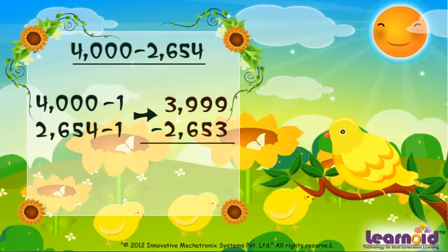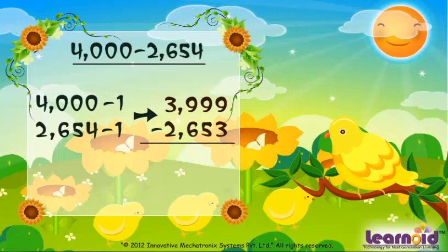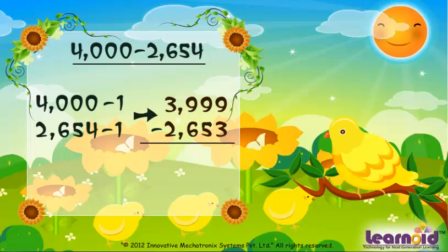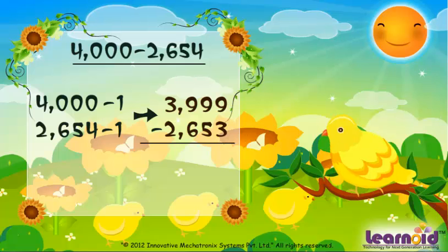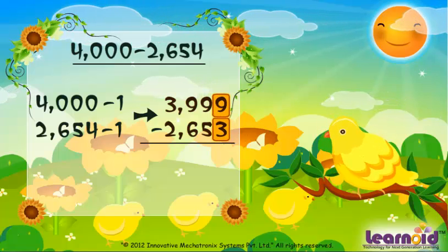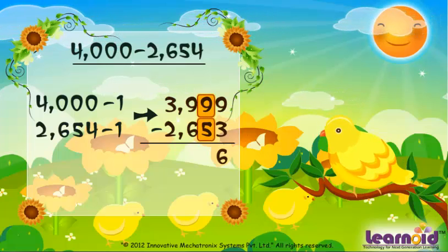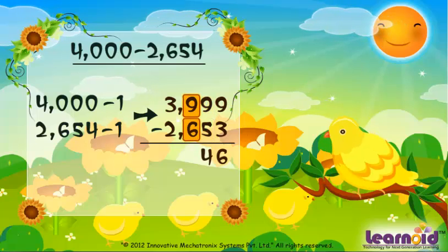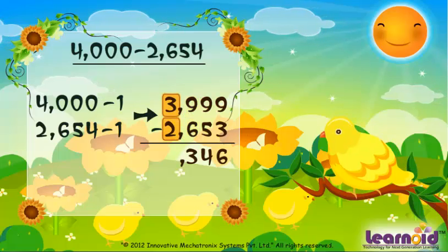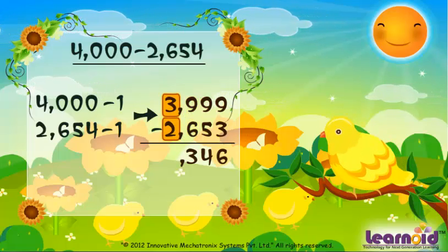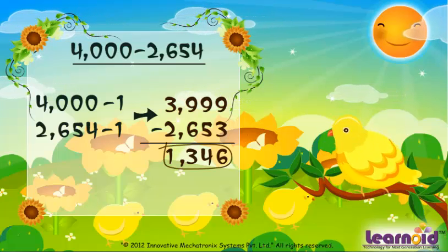Now we have to subtract 2653 from 3999. It can be easily subtracted. 9 minus 3 is 6. 9 minus 5 is 4. 9 minus 6 is 3. 3 minus 2 is 1. The answer is 1346.